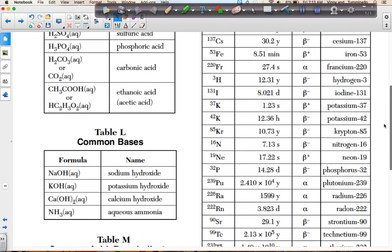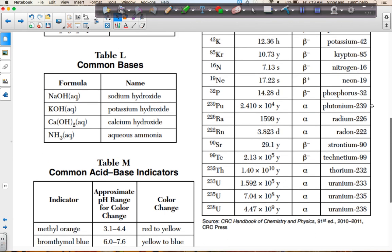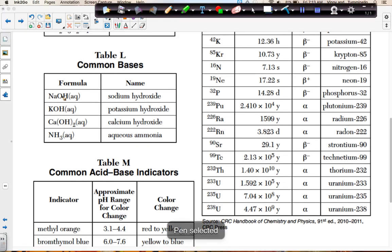For table L, which is our table of common bases, when we're looking at table L, we usually, for a base, will have a metal in front of OH. But again, remember, NH3 is also a base. Bases have OH minus as the only negative ion in solution. Bases will tend to have a higher pH. And bases are also electrolytes, meaning that they will conduct electricity in solution, again, due to the mobile ions present.